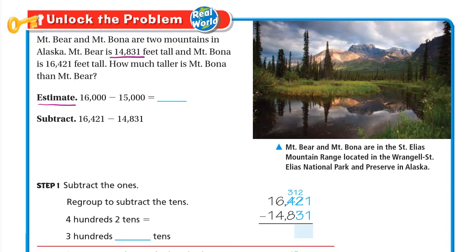First of all, let's estimate. We used 16,000 and 15,000 — let's see why. In addition, when we round, we round to the digit with the greatest place value. In subtraction, we round to the digit before the last digit. Here we round to the thousands: the four has an eight to its right, which is strong, so four thousand becomes five thousand — fifteen thousand.